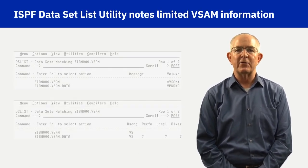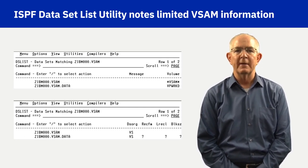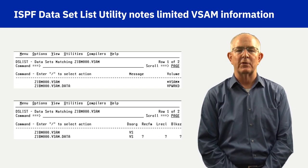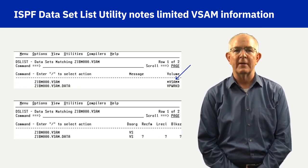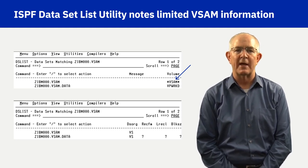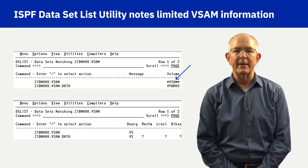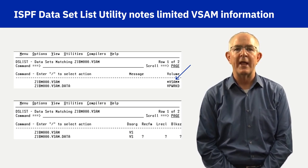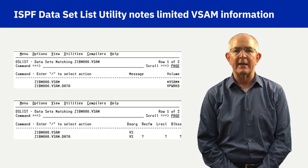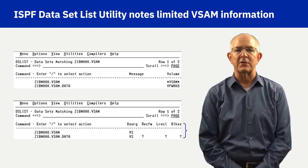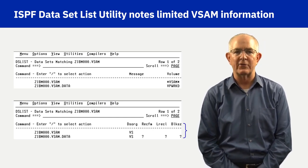The ISPF dataset list utility is only useful for determining that a dataset is a VSAM dataset. Observe the top display showing ZIBM000.VSAM with *VSAM* in the volume column. The *VSAM* indicator means ZIBM000.VSAM is the cluster name, and ZIBM000.VSAM.Data is the physical dataset on disk volume VPWRKD, which is the cluster name data component. The bottom display is a shift right of the dataset list utility panel, and the attributes are nearly non-existent except for VS in the DSORG dataset organization column.